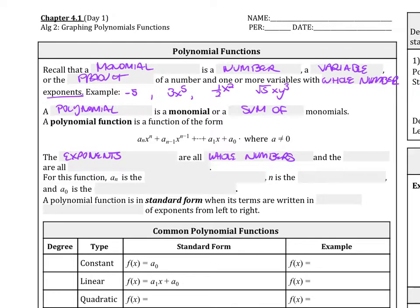So the exponents are all whole numbers. And the coefficients, the numbers in front, are all real numbers, so no imaginary numbers. They're all real numbers, no i.